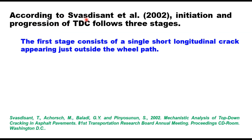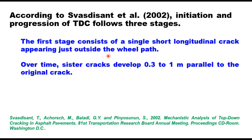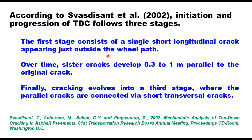According to a team of researchers, initiation and progression of TDC follows three stages. The first stage consists of a single short longitudinal crack appearing just outside the wheel path. In the second stage, over time, sister cracks develop 0.3 to 1 meter parallel to the original crack. Finally, cracking evolves into a third stage where the parallel cracks are connected via short transversal cracks.